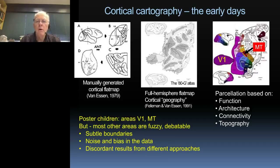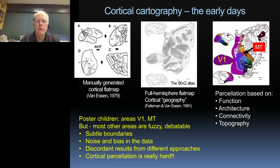Some of these areas, like area V1 and MT, are the poster children because they are well identified by each of these methods. But there are great challenges in deciphering the parcels of the cerebral cortex in most regions because the methods are noisy and there are biases and difficulties in accurate parcellation. It's a really hard but extremely important challenge.